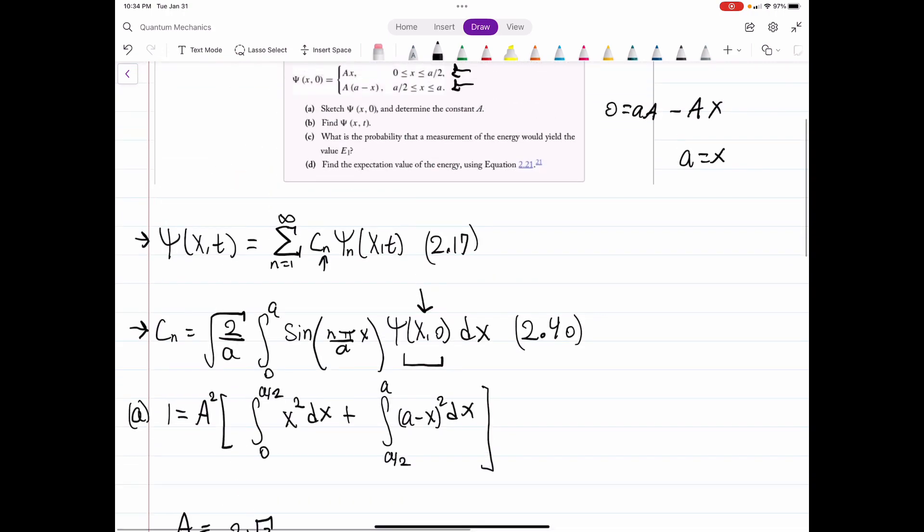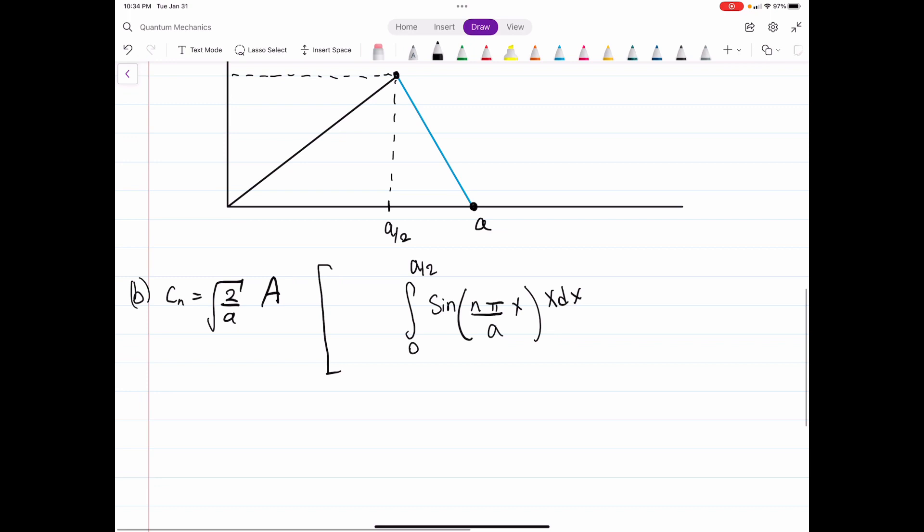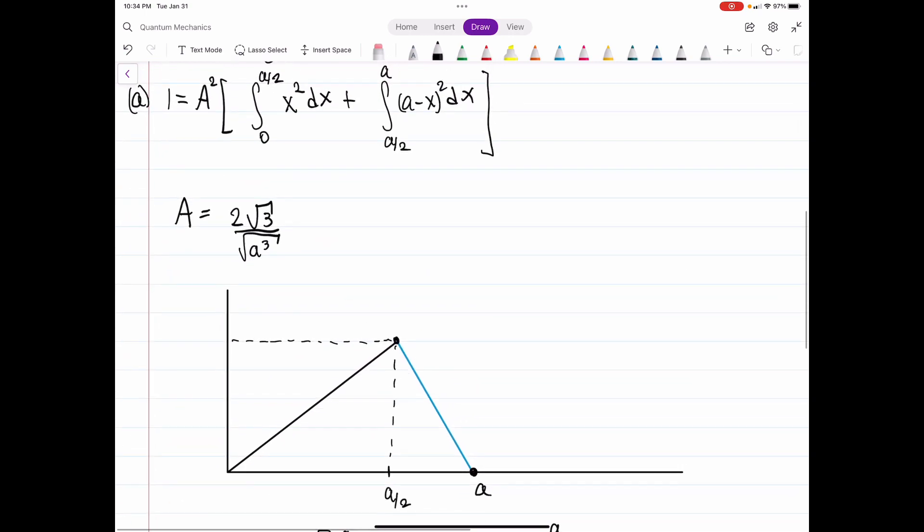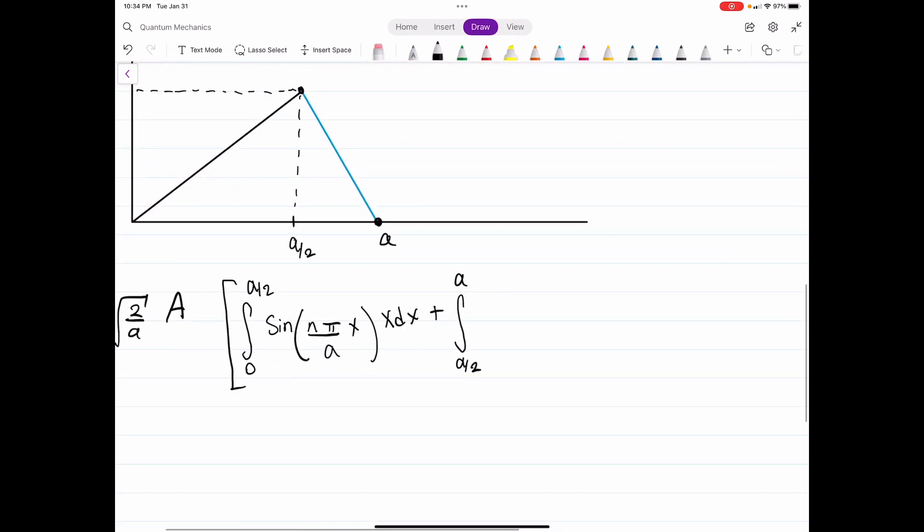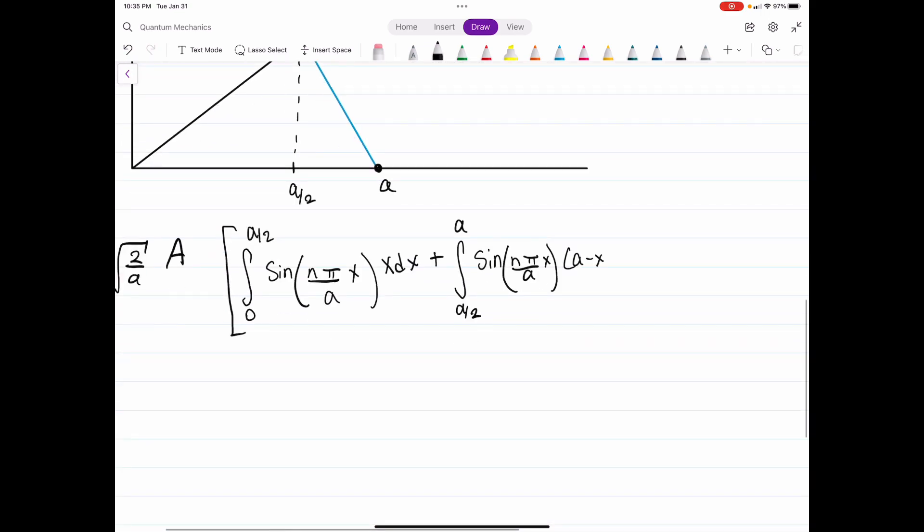So for our first part, from 0 to a over 2, it's just x. So we'll do x dx. Plus, we have the other integral from a over 2 to a. And the main difference here is this will have our sine function, but it'll have the a minus x, dx.